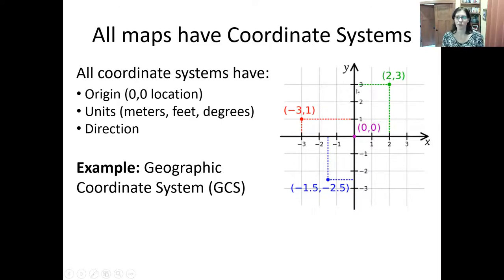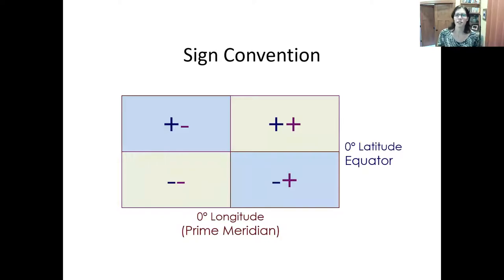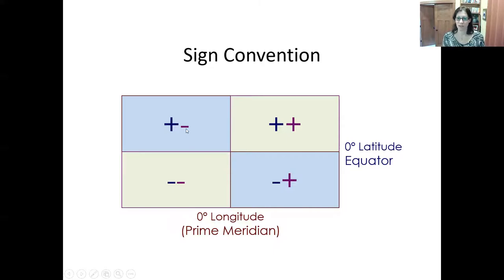One example of a coordinate system is a geographic coordinate system. In a geographic coordinate system, we assign our zero point at the prime meridian — zero degrees longitude — and our zero point north-south is at the equator, zero degrees latitude. So where we are in Massachusetts, we would say roughly 41 degrees north (positive) and roughly negative 71 degrees westing. If we were in the northern and eastern hemisphere, both numbers would be positive.